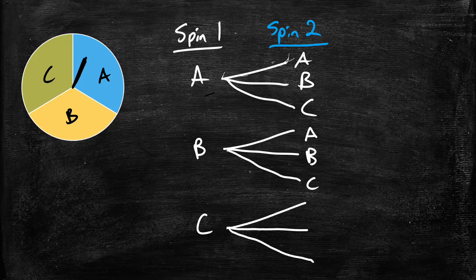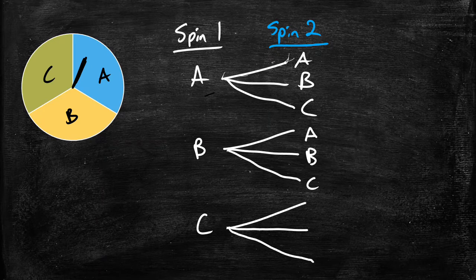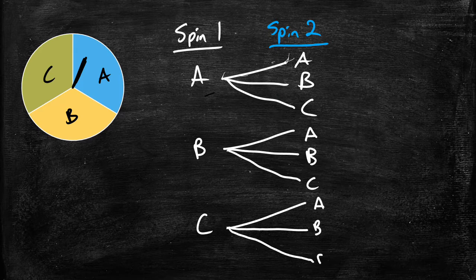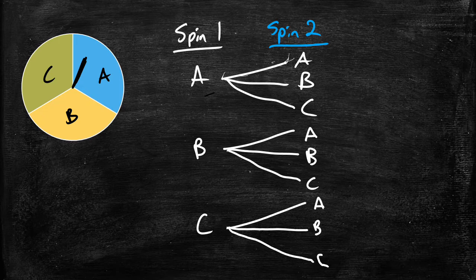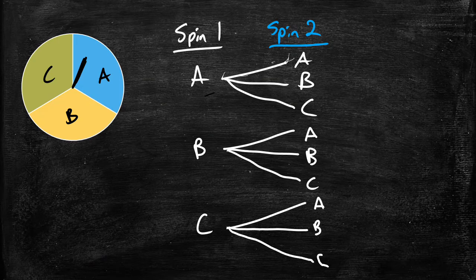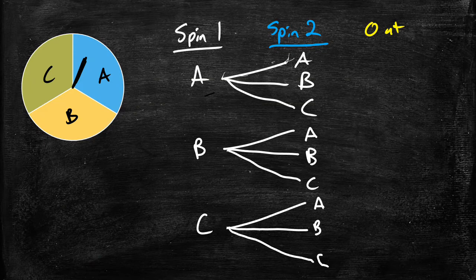And again at the very bottom here if you spin a C on the first time the second time you could either get an A, a B, or a C. And this is because they're independent events. They don't impact each other one spin to the next.